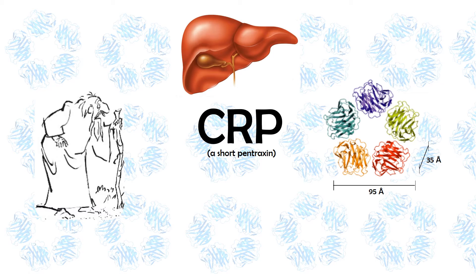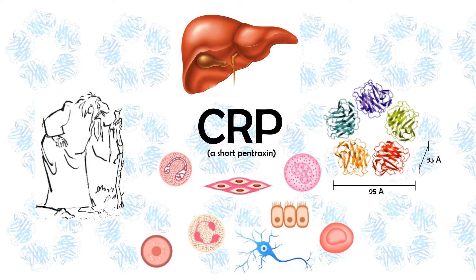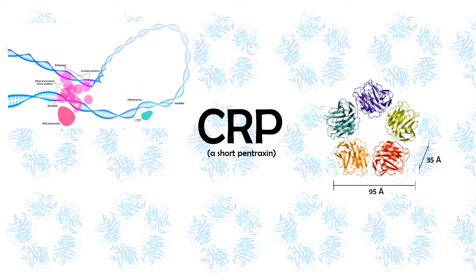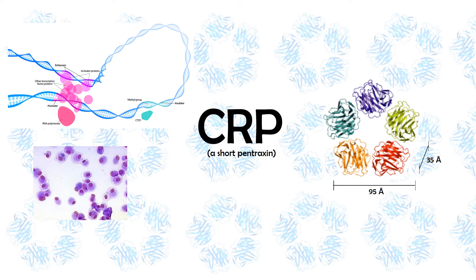CRP is mainly produced in the liver, though it's been found in other cells as well. Its production is positively regulated at the transcriptional level by interleukin-6, a cytokine produced by macrophages and adipocytes, which signals the activation of transcription factors on chromosome 1, where the CRP gene is located.